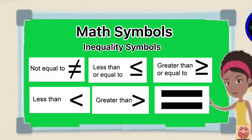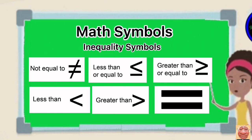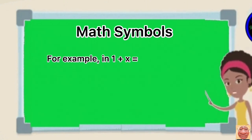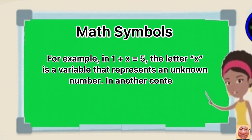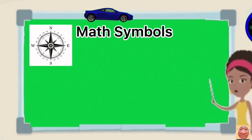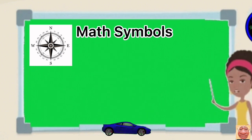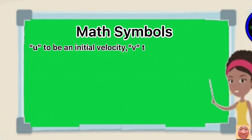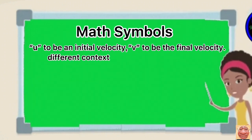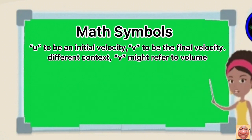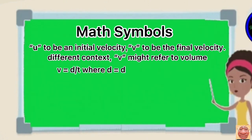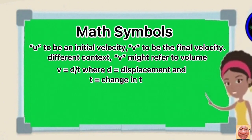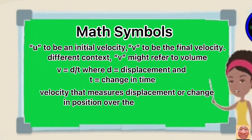Variables are another form of math symbols. They are used to represent quantities that take different values. For example, in 1 plus x equals 5, the letter x is a variable that represents an unknown number. In another context, imagine that you are trying to know the velocity of a car traveling from north to south. By convention, we use u to be an initial velocity and v to be a final velocity. If we are in a different context, v might refer to volume. We need to check the context to fully understand the meaning. If we see v equals d over t, where d is equals to displacement and t is equals to change of time. Hence, v represents velocity that measures displacement or change in position over the change in time.